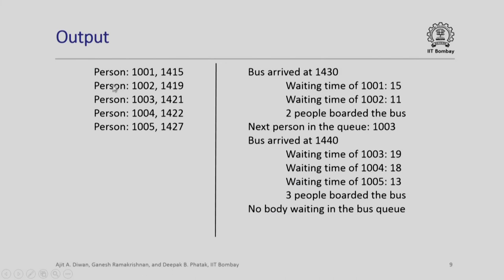The sample output shows: persons 1001 through 1005 arrived at 14:15 through 14:27. The first bus arrived at 14:30; waiting times are calculated for each person, 2 people boarded, and the next person in the queue was 1003. The next bus arrived at 14:40 with waiting times shown, 3 people boarded, and nobody was left waiting.